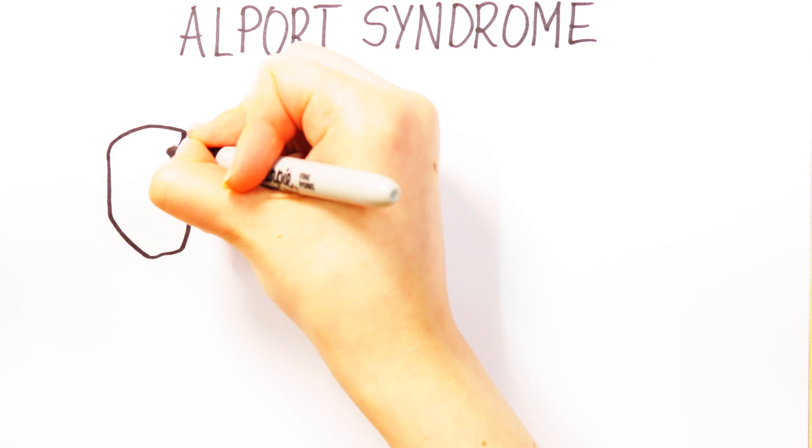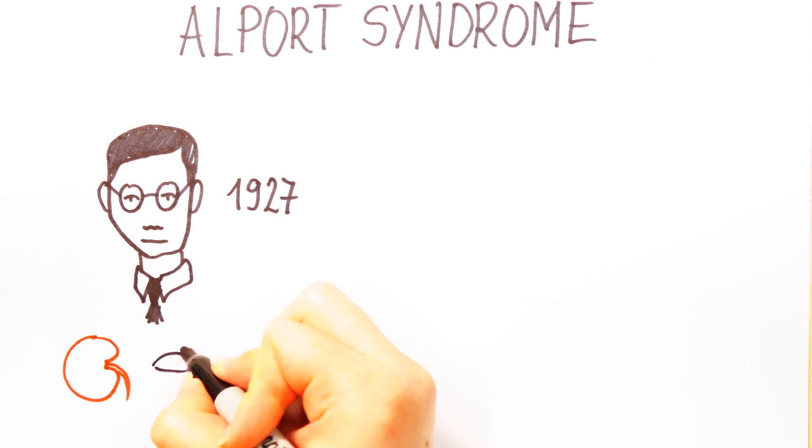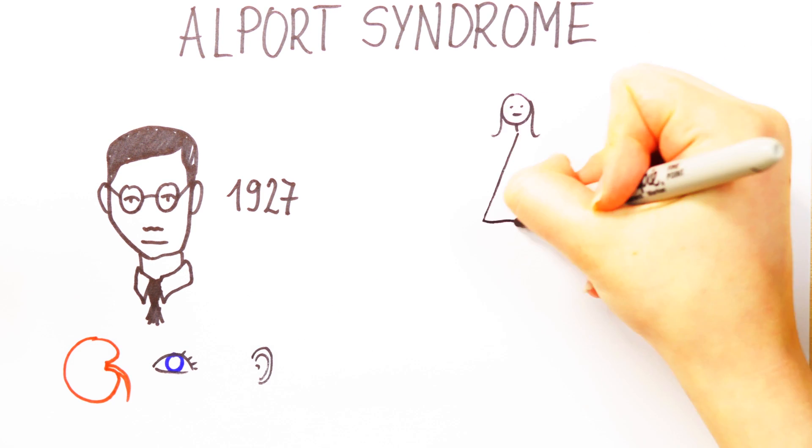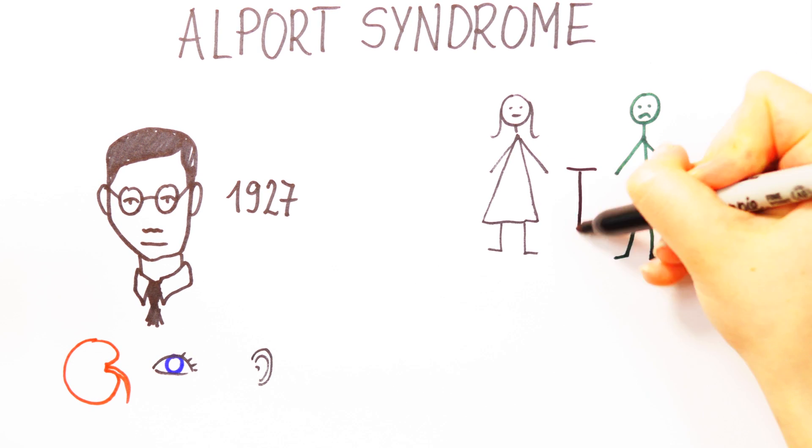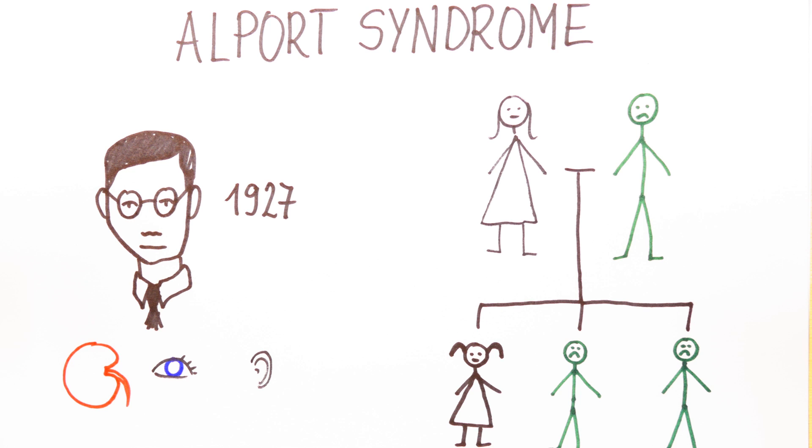Alport syndrome is a rare condition that affects the kidneys, the inner ear and the eyes. It was first described by Cecil Alport in 1927, who noticed that the condition affected families, with the male members becoming more severely affected. He concluded that it must be inherited in some way.